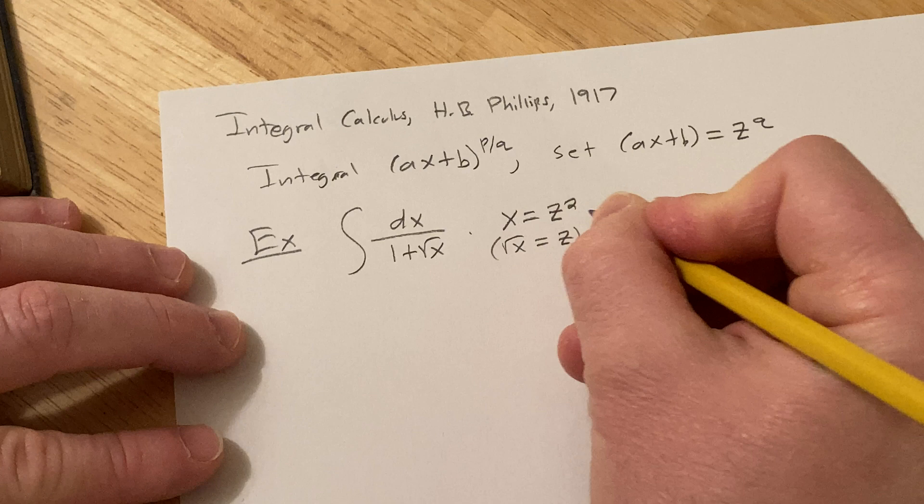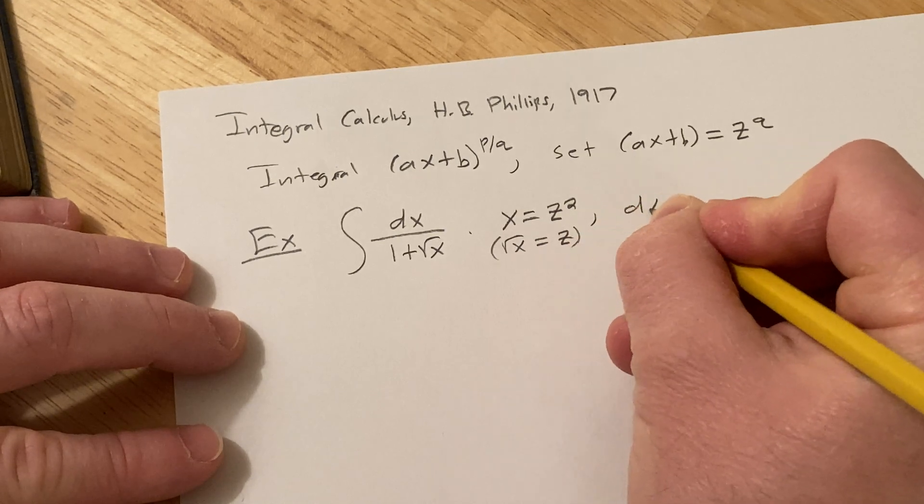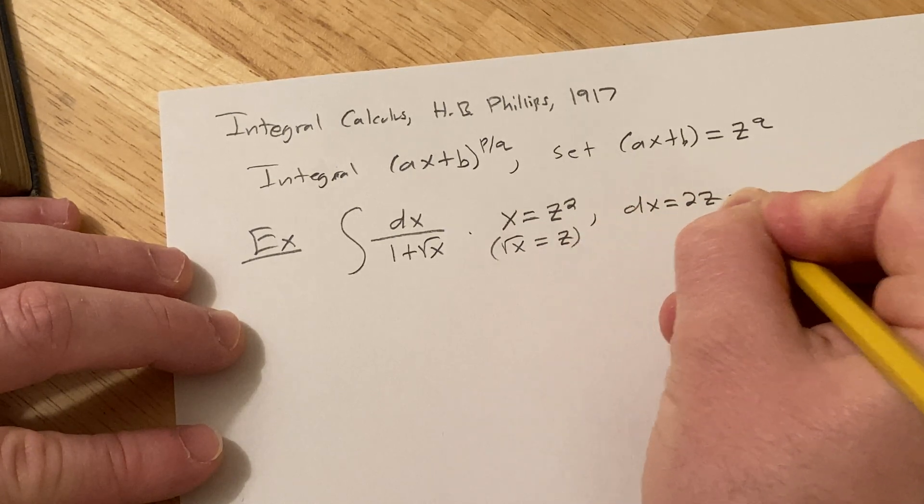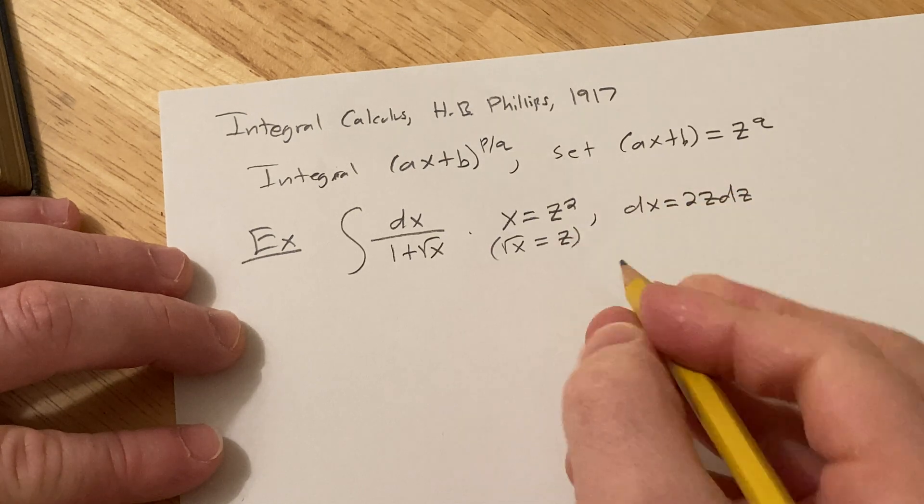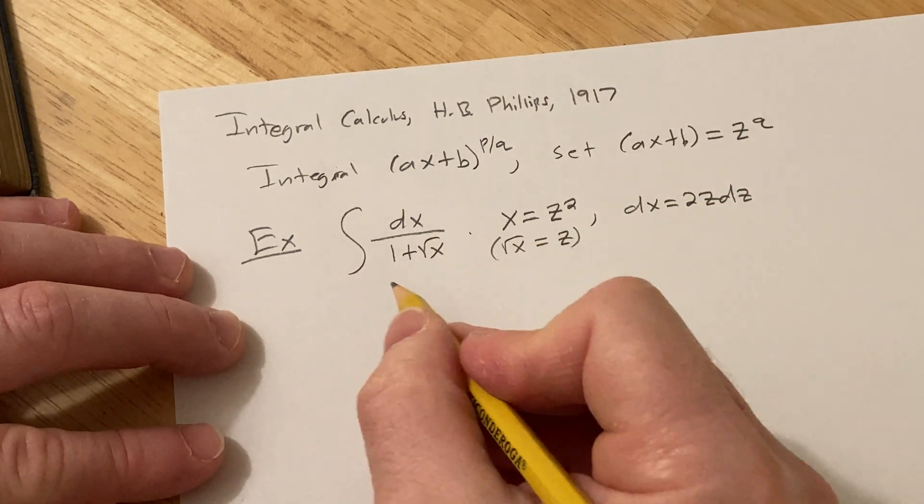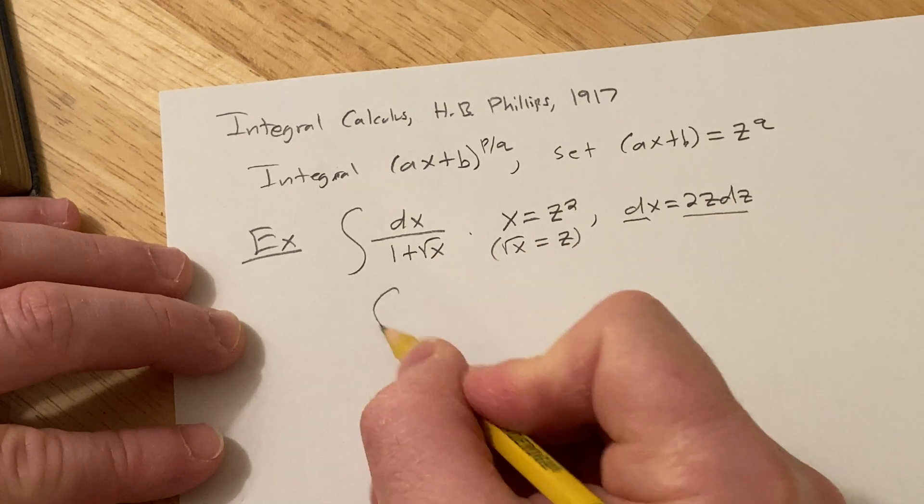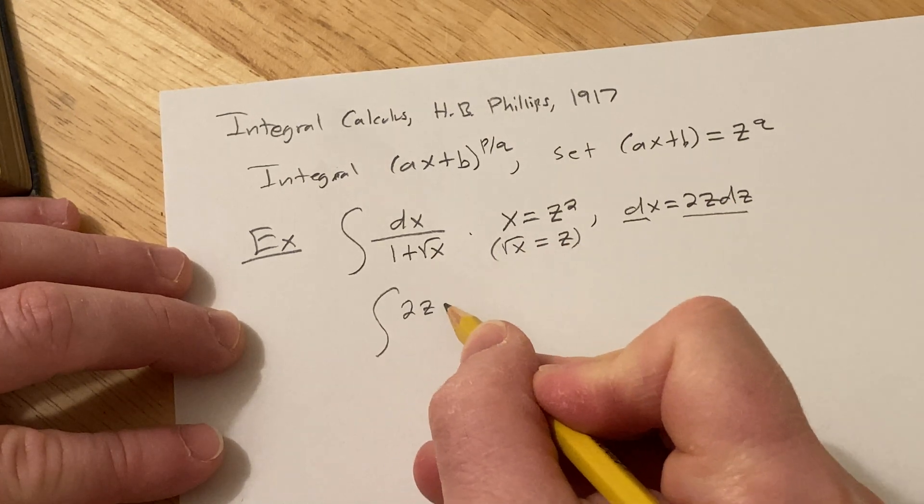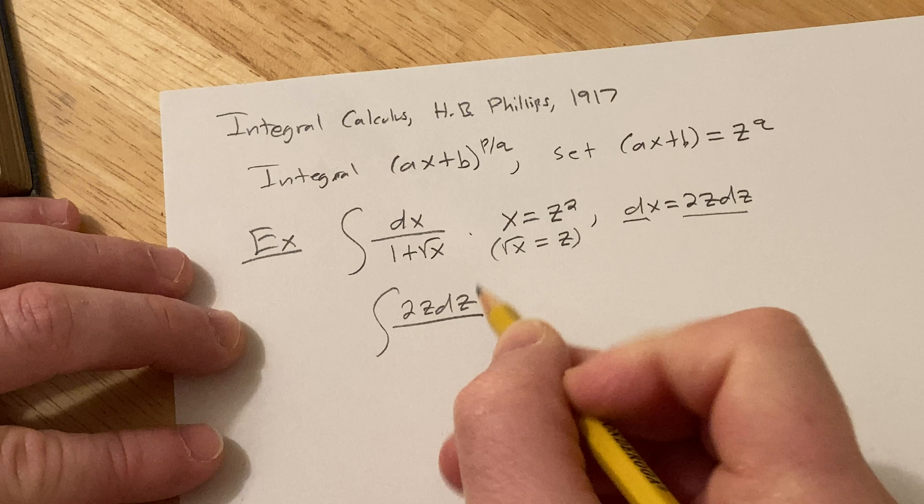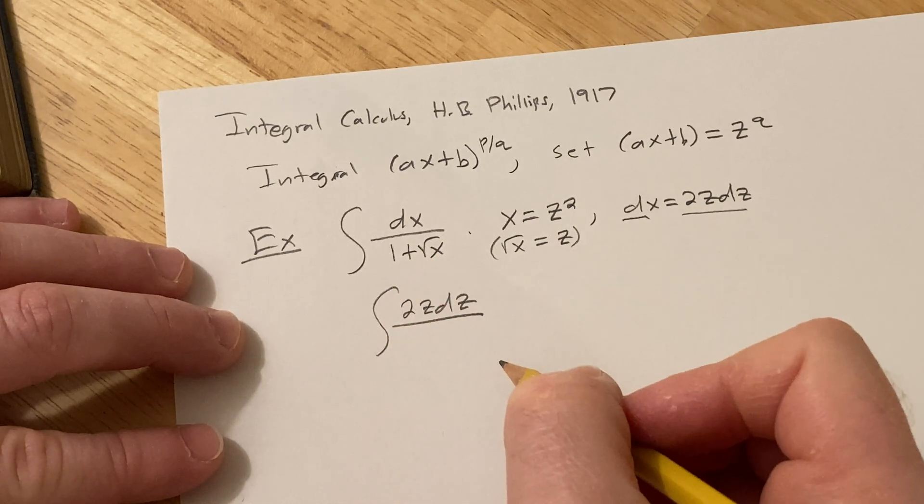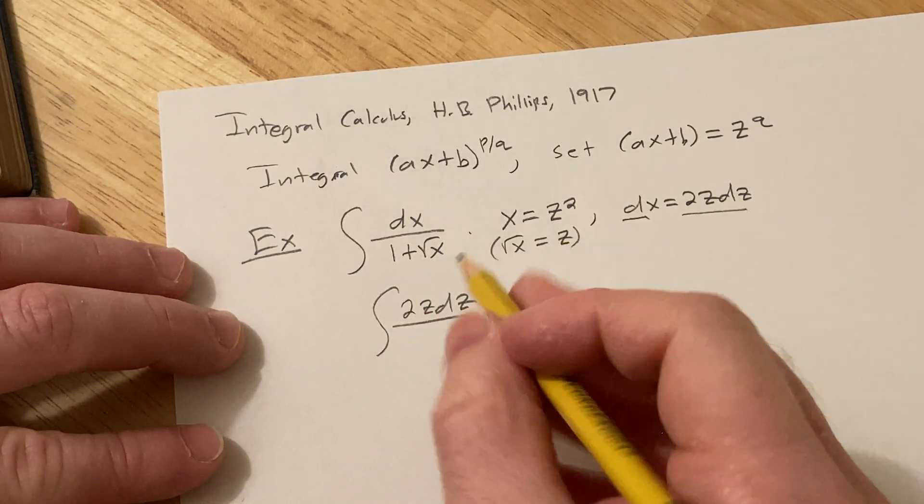And then computing dx, we end up with dx equals 2Z dz, just using the power rule there. Alright, so now we're ready to make the full substitution. So dx is equal to 2Z dz. This is going to be 2Z dz, and 1 plus the square root of X, well that's just going to be 1 plus Z.